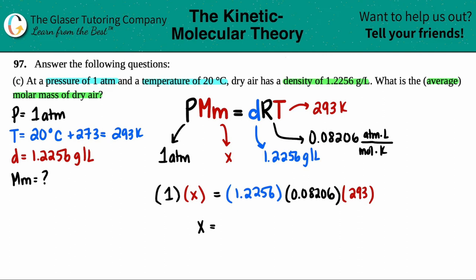1.2256 times 0.08206 times 293. And I mean they did give us five sig figs here, so maybe we'll give five back, but does it really matter? I don't think so. So we'll say 29.4768.